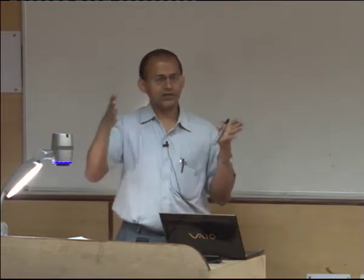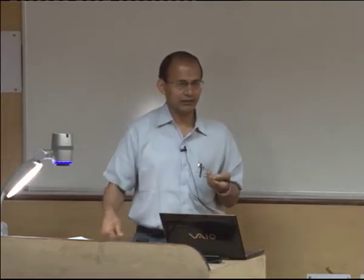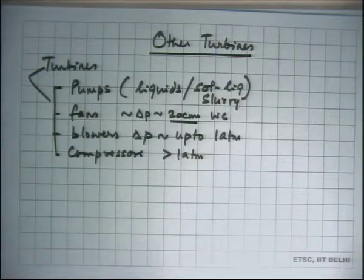Another place where you encountered a large compressor was the Dadri power station gas turbine unit, because gas turbines take air from the surrounding atmosphere and compress it to a certain high pressure before burning fuel in it. Compressors are larger pressurized machines and blowers are in between the two. Blowers are commonly used in heat convectors in winter, and also in window air conditioners which recirculate room air through the evaporator coil. These are the broad categorizations of turbo machinery.